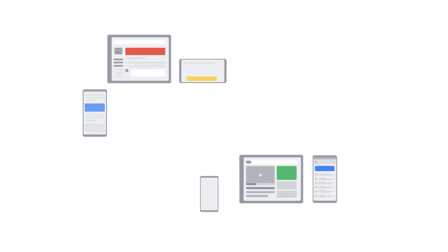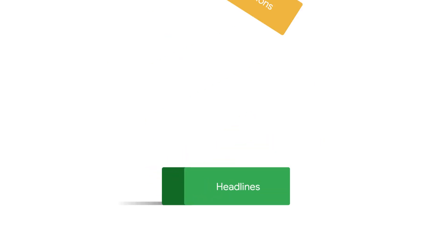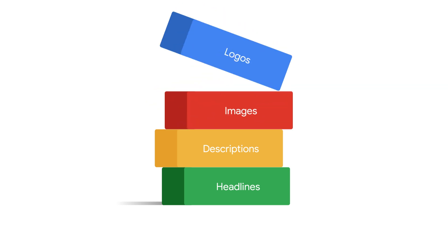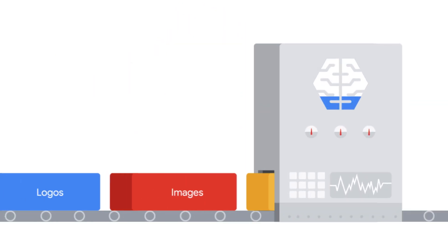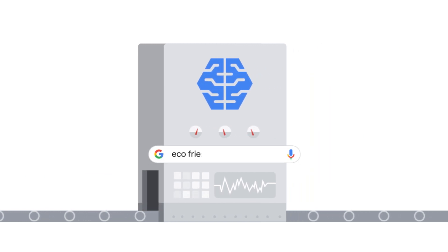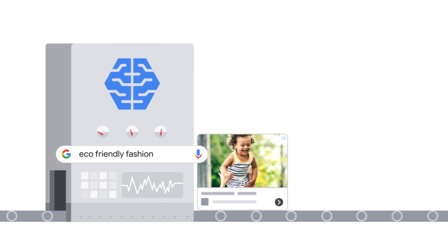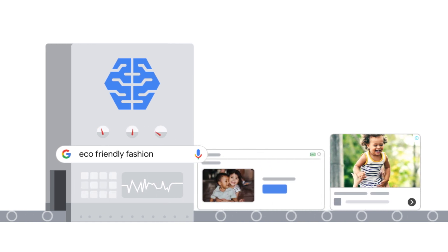Responsive display ads are a form of asset-based ads that show up on the Google Display Network. An asset is part of an ad, such as a headline, description, image, or logo. To create responsive display ads, you upload assets into Google Ads. Then, machine learning algorithms combine these assets in countless combinations while continuously optimizing for performance. In this video, we'll review creative best practices for responsive display ads in order to reach customers and drive performance.